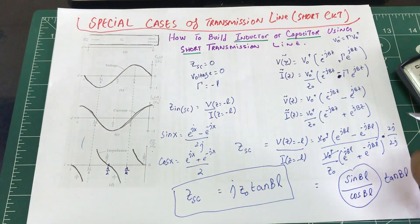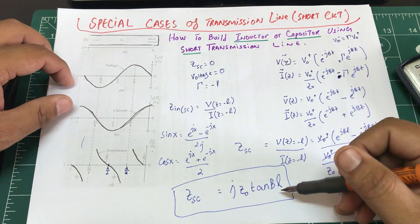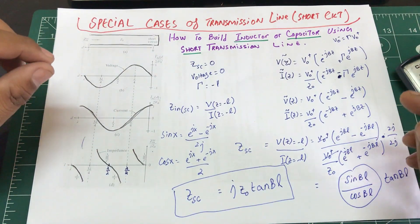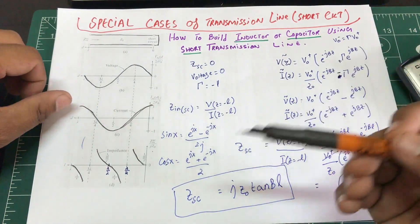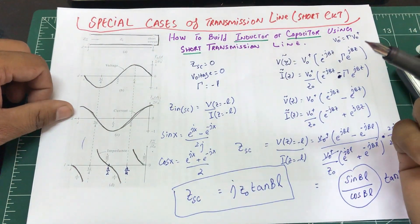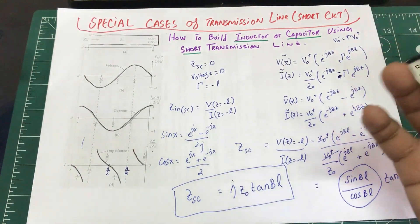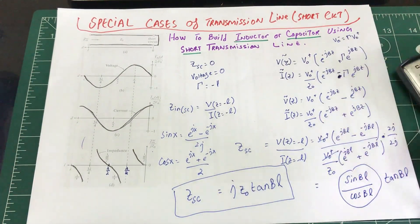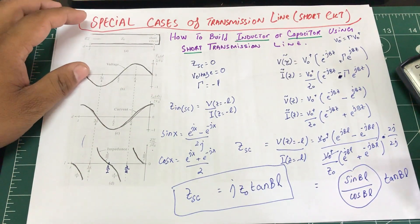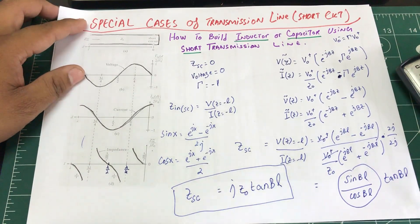By simply solving for l, you can find the length of transmission line needed to make it act as an inductor or a capacitor. I hope you liked this tutorial on special cases of transmission lines and how to build inductors and capacitors using a short circuit. If you have any questions, leave them in the comment section, and don't forget to like and subscribe.